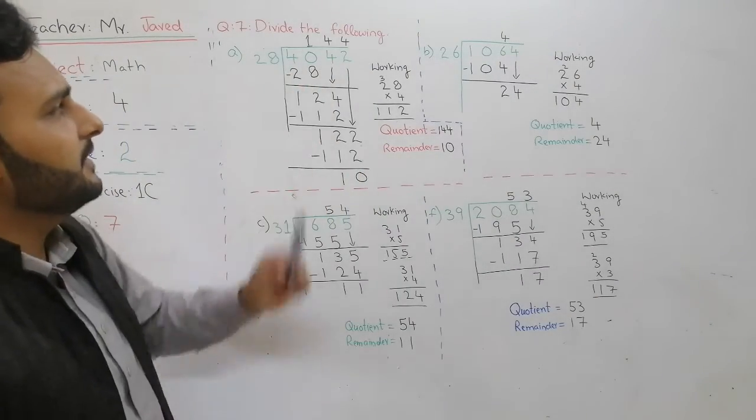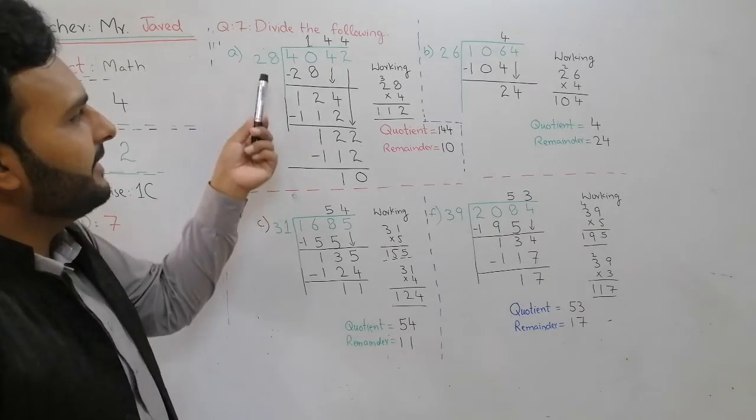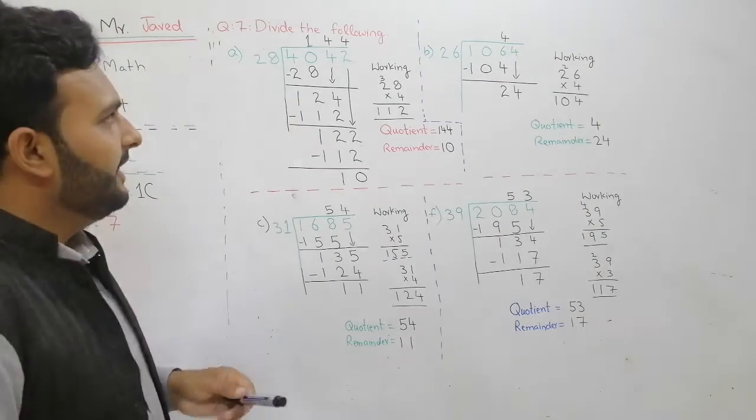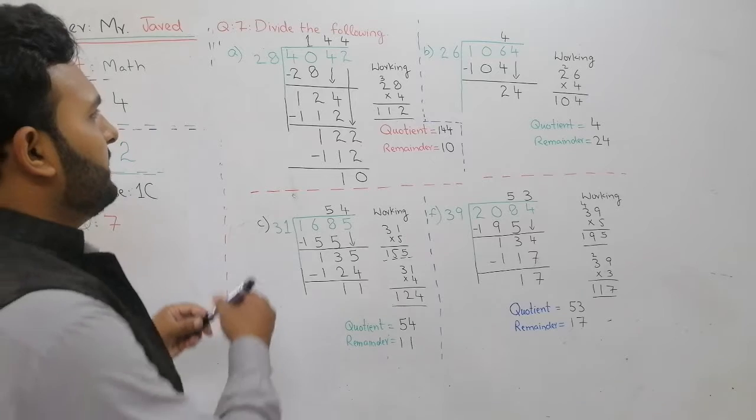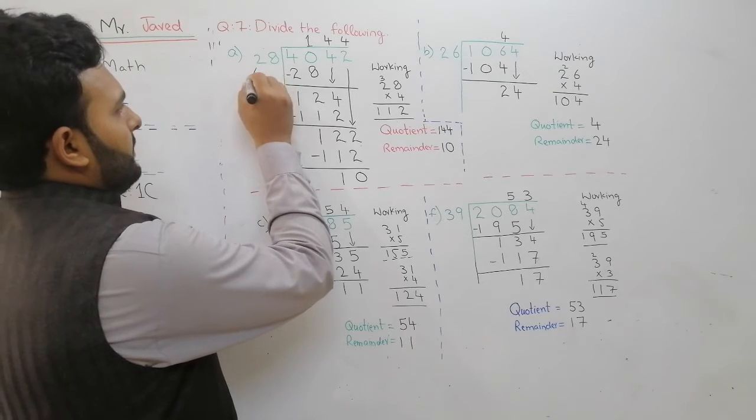Divide the following. First question is A part. How many students, is this divisor? This divisor?